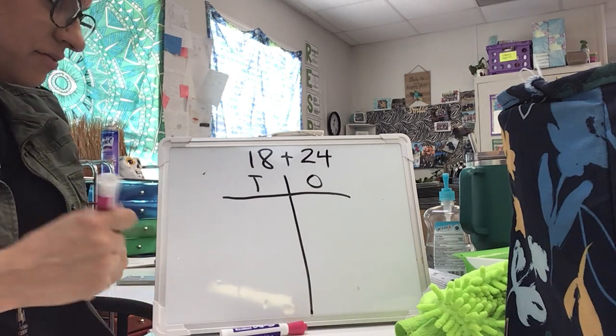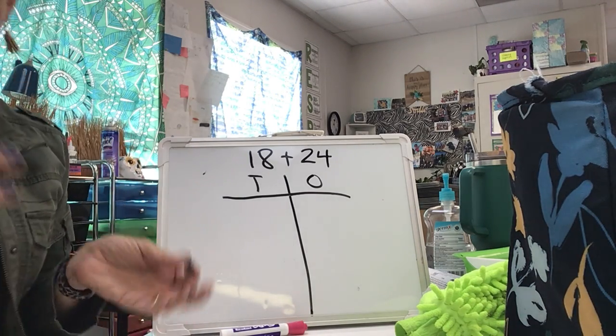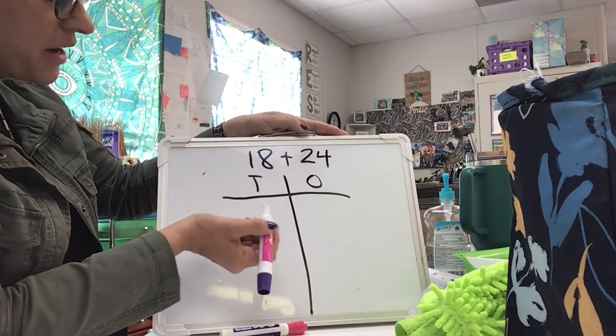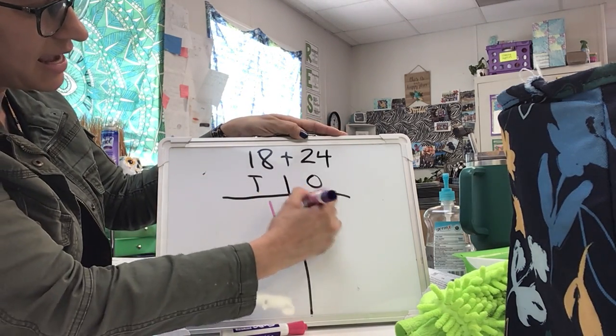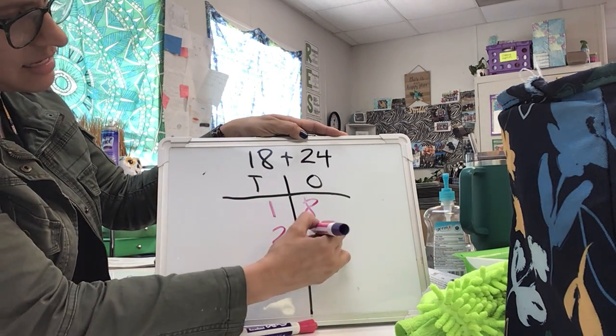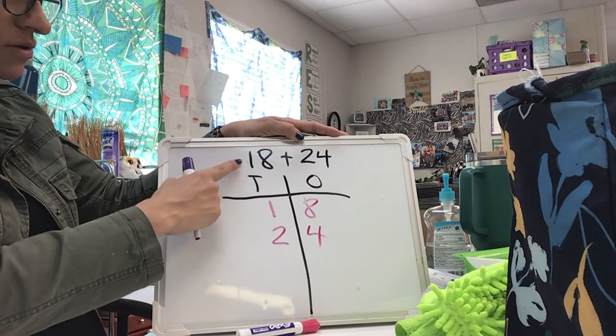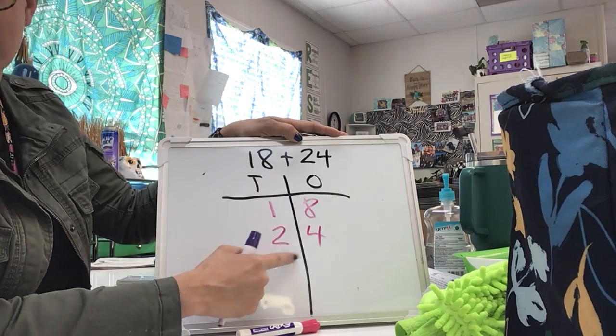Before we get started, when I'm thinking of a tens and ones chart, I have to know which is my tens place and which is my ones place. The number 18 has one in the tens place and eight in the ones place. The number 24 has two tens and four ones. So again, I'm just looking at these two numbers, and I've got 18 and 24.